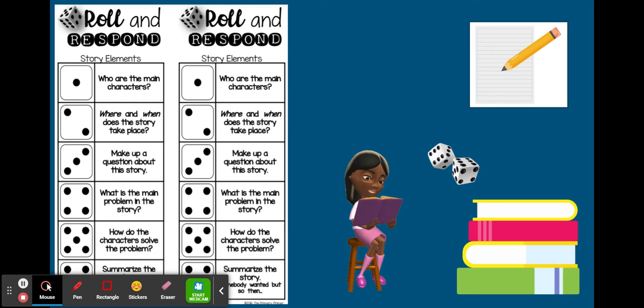The first step, step one, is to read any book. Step two is to roll the die one time. Step three is to answer the question that matches the number on your die.